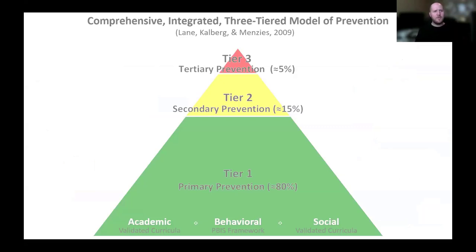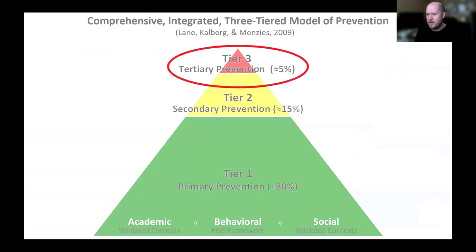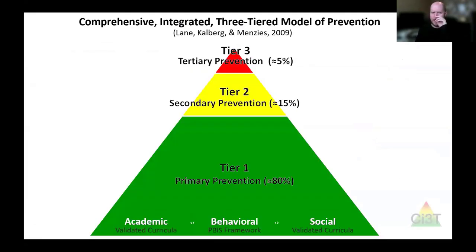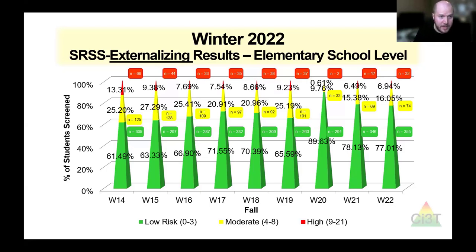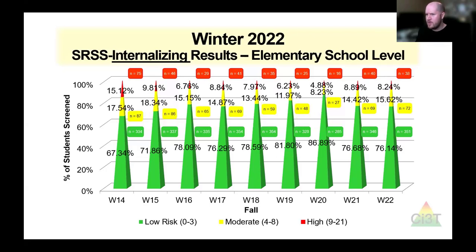This is an example of what it might look like for a school that's been implementing CI3T for some time. We collect this information and want to look longitudinally across time to see how well students are faring within our schools and whether students are responding to our efforts. If you're looking at the data in winter of 2019, you might notice a little dip — that's good information to know, because then you can respond and say: what can we adjust to help our kids with these externalizing challenges, or with internalizing issues as well?